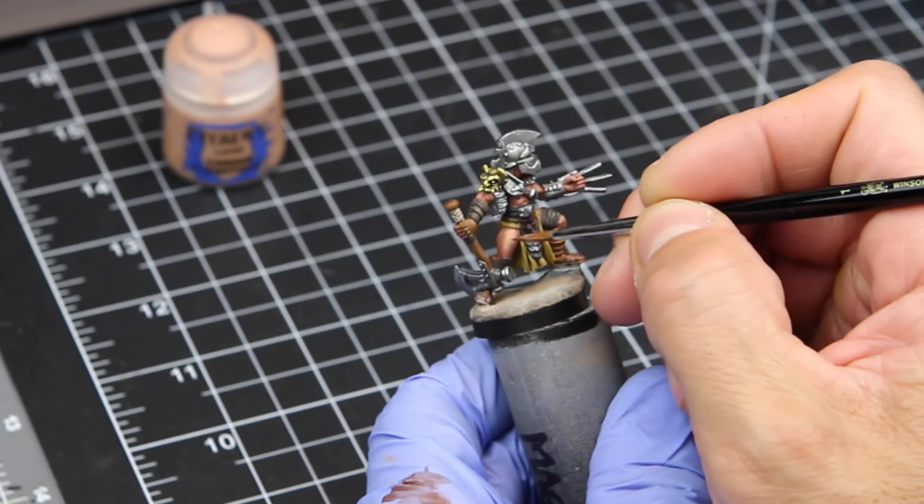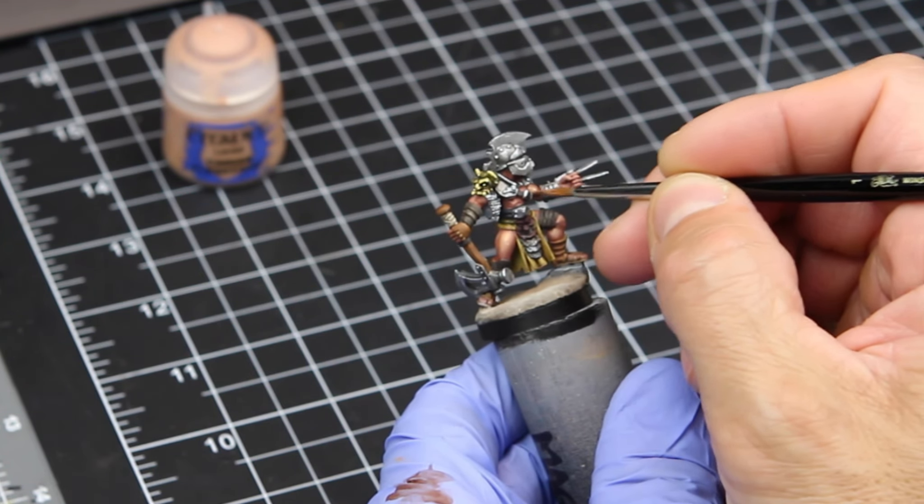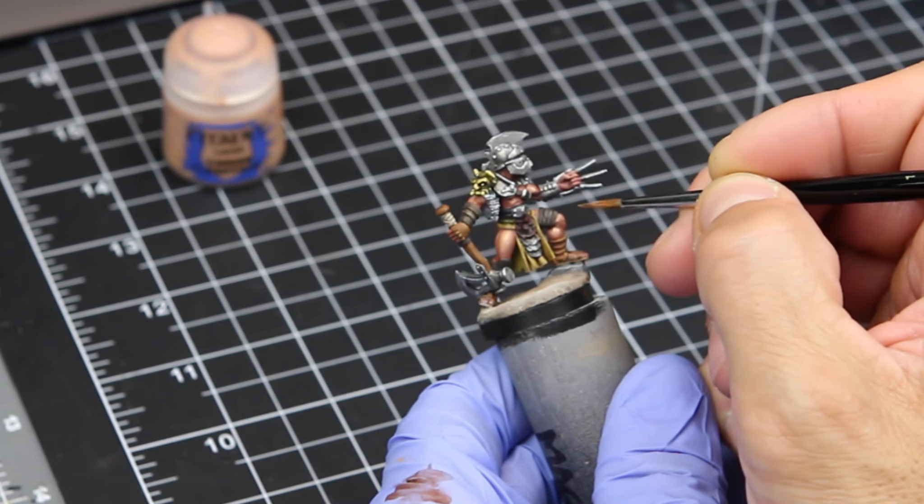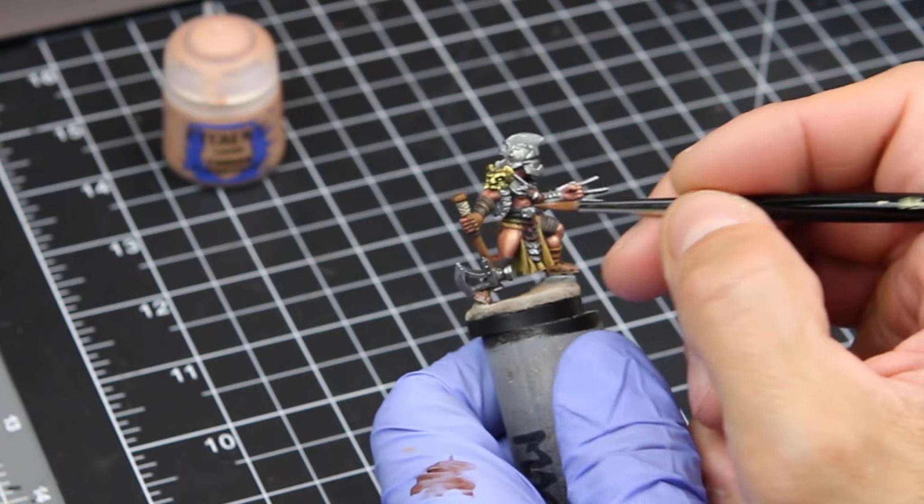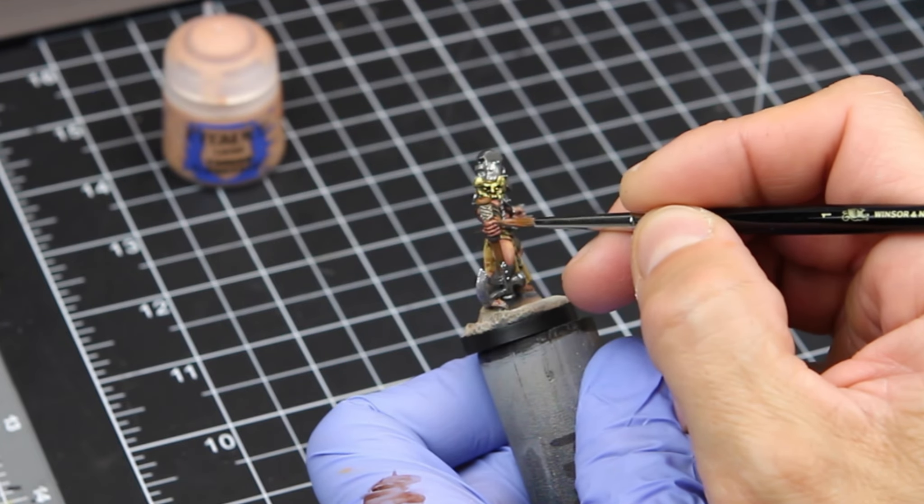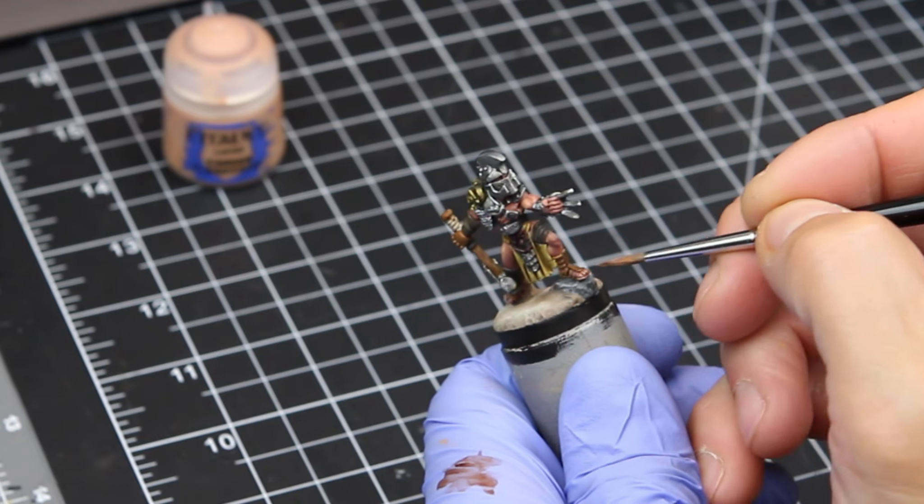Now we can go back to our technique from earlier, the glaze. And again, this is probably close to that six to one water to paint ratio. And we're going to hit just the highest points. And you can see I'm really not even doing large brush strokes, almost kind of just dabbing it on very lightly on the highest points.